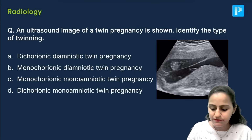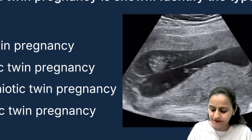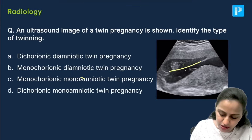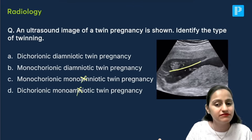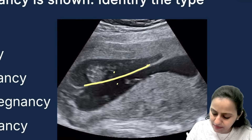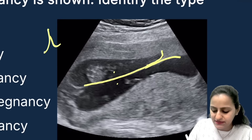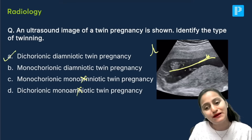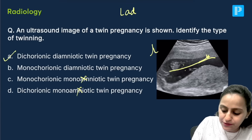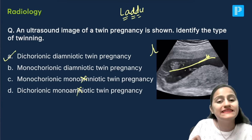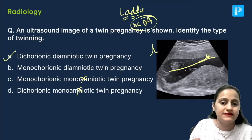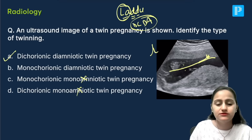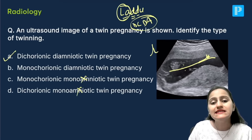The next question on twin pregnancy asks: what is the type of twinning? There is a separating membrane visible, which tells us it is diamniotic and not monoamniotic. The separating membrane is splaying out like a lambda sign, with the chorion in between. So this is dichorionic diamniotic twin pregnancy. Remember the mnemonic LADDU: lambda sign is seen in DD — dichorionic diamniotic pregnancy. This is also called the twin peak sign.